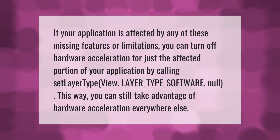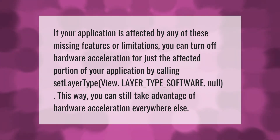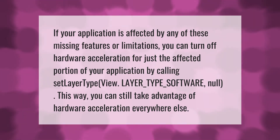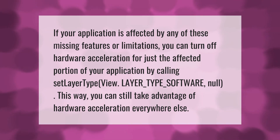If your application is affected by any of these missing features or limitations, you can turn off hardware acceleration for just the affected portion of your application by calling setLayerType(VIEW_LAYER_TYPE_SOFTWARE, null). This way you can still take advantage of hardware acceleration everywhere else.